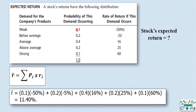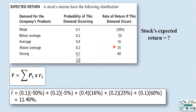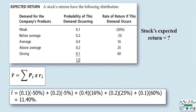This multiplication is repeated for all scenarios to get the expected rate of return. For example: 0.1 (the probability of the weak scenario) times minus 50% (the rate of return under weak scenario), plus 0.2 times minus 5%, plus 0.4 times 16%, plus 0.2 times 25%, and finally 0.1 times 60%, which gives us 11.4%. So the most expected rate of return under these probability distributions is 11.4%.